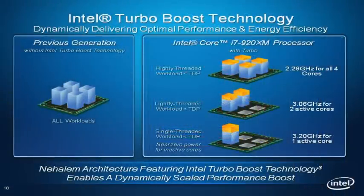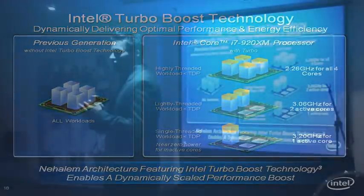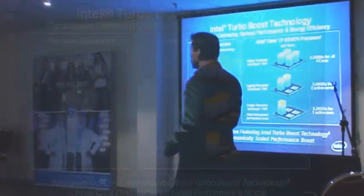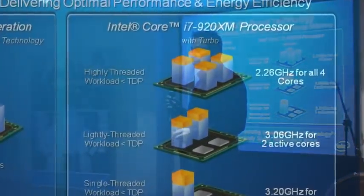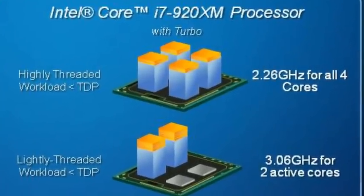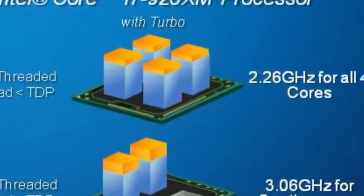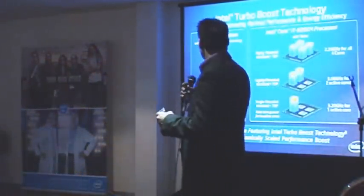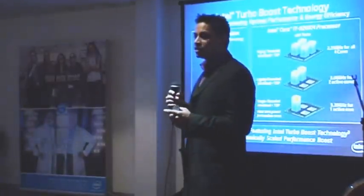On the left you have a quad-core system with four cores, and on the right you have a system with turbo. Turbo works differently — each core can be enhanced with turbo, with each bin equaling 133 MHz. For example, if you have a 2.26 GHz CPU and enable turbo mode, each bin is 133 MHz. On the i7-920 with all four cores on, you can add two bins per core.